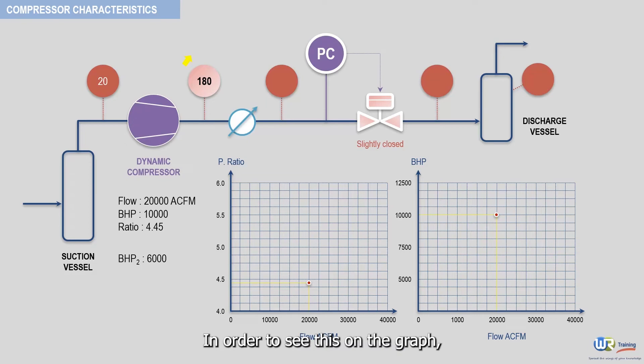In order to see this on the graph, we need first to calculate the new pressure ratio. Recall that the pressure ratio is equal to the discharge pressure divided by the suction pressure. Both pressures must be expressed in absolute terms.